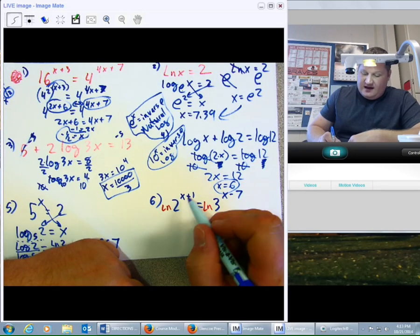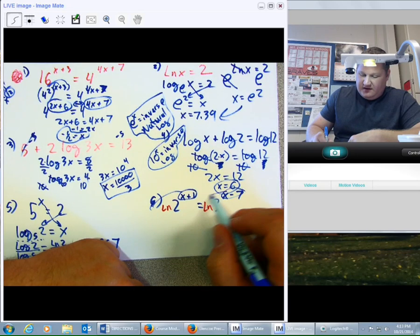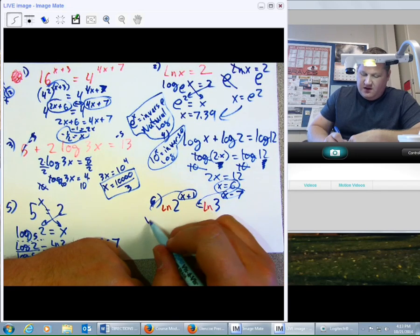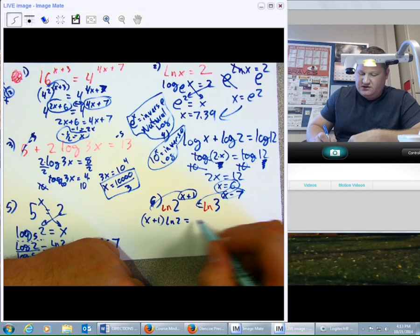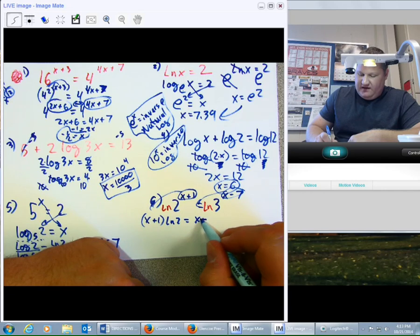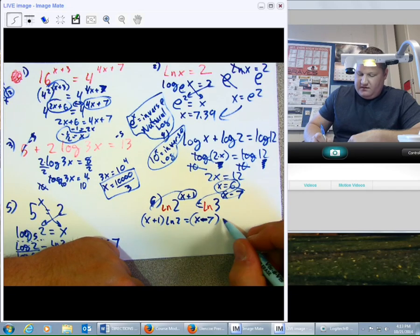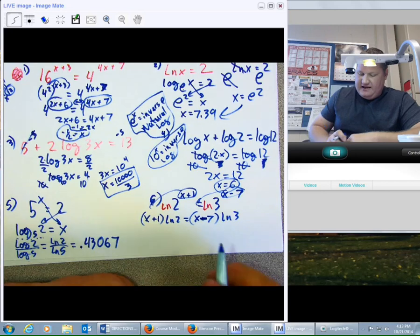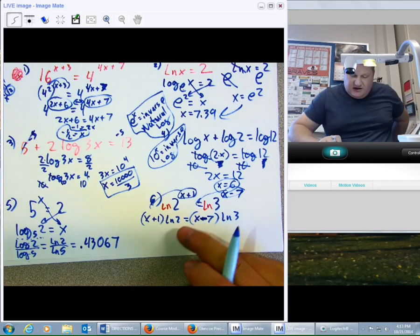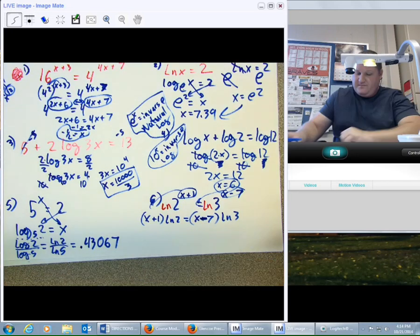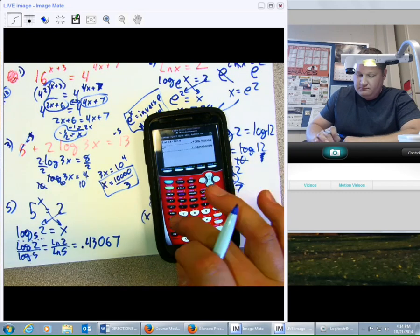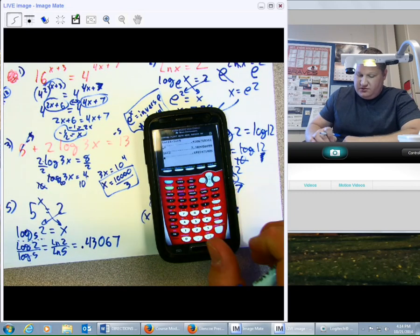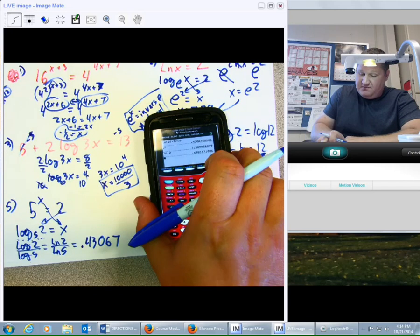And as long as I do the same thing to both sides, both sides stay equal. That allows me to take this, pull it out front. Take this, pull it out front. So, I have x plus 1 in parentheses because it is a quantity times the natural log of 2. x minus 7 times the natural log of 3. At this point, you need to understand that the natural log of 2 is just a number. It is just a number, and I'm going to estimate it. So, natural log of 2, natural log of 2, and that turns out to be 0.7.